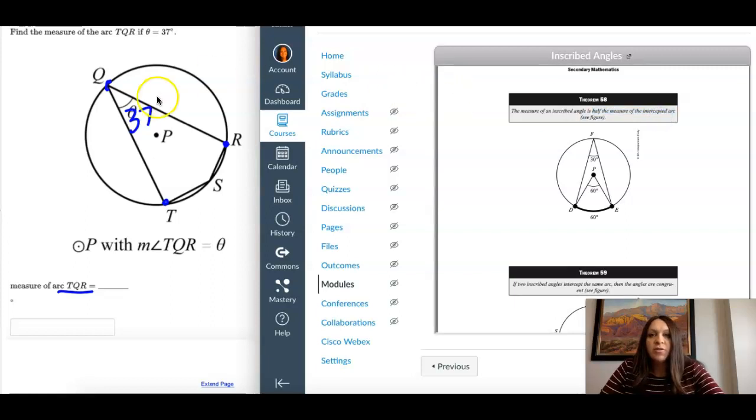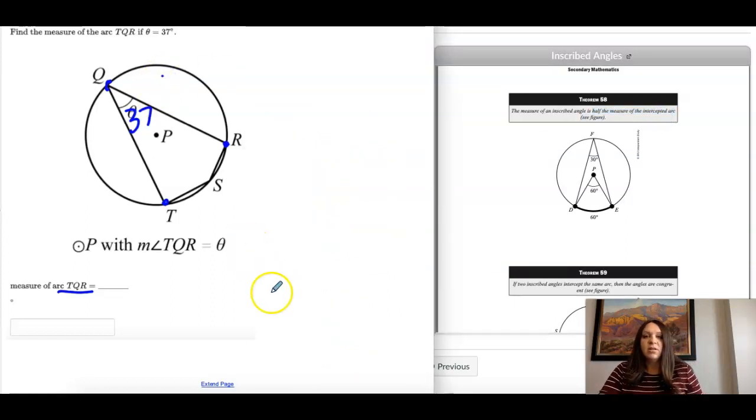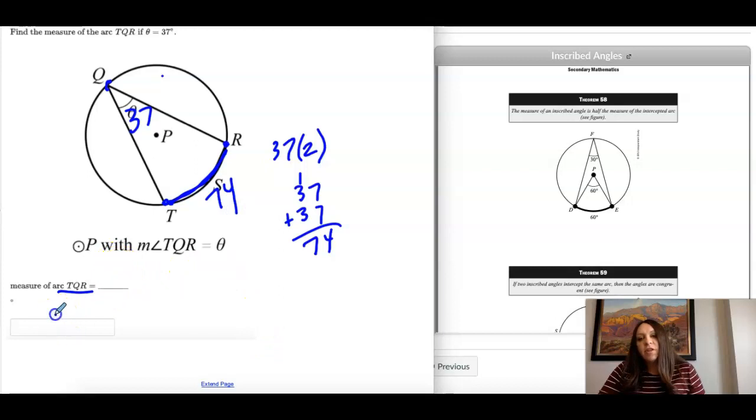See how it is half the measure? So if this is 37, the arc would be 37 times 2. So 37 plus 37 is 74. So this would be 74 for the arc. Okay, so that's the last one. Again, I would refer back to your notes on these. There's a lot of theorems and pictures.